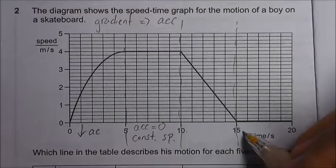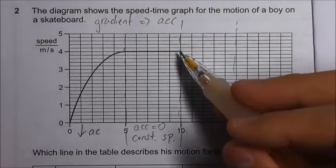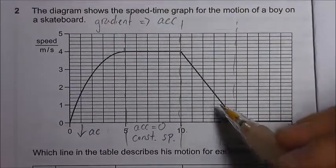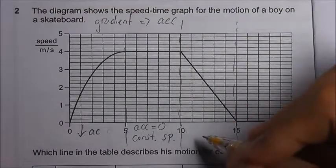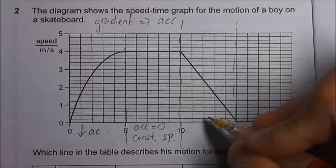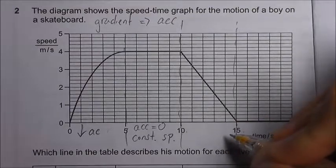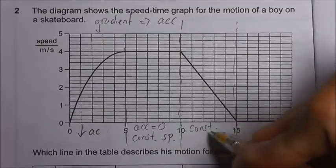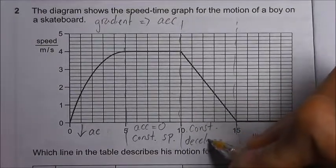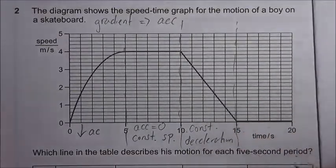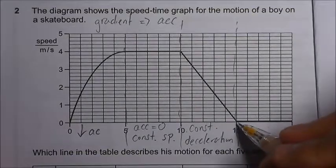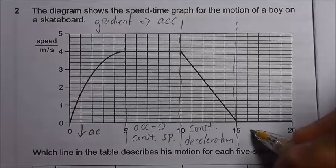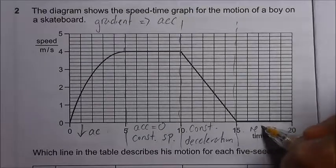For 10 seconds to 15 seconds, the graph is a sloping straight line that is going downwards, so we can say that the gradient is constant. It should be constant deceleration, constant acceleration. And the last part is at zero throughout for the speed, so the boy is at rest.